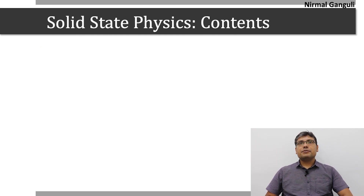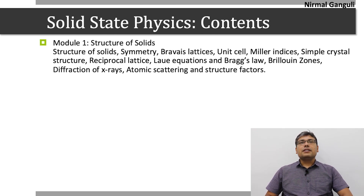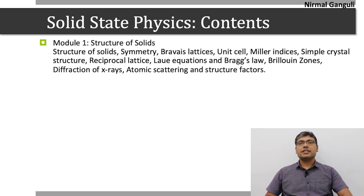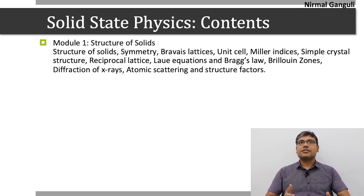The content of this course comprises 7 modules. The first module is the structure of solids, which includes symmetry, Bravais lattice, unit cell, Miller indices, simple crystal structures, reciprocal lattice, Laue equations and Bragg's law, Brillouin zones, diffraction of X-rays, atomic scattering and structure factors. This gives us an understanding of the structure of solids as well as how experiments determine the structure.